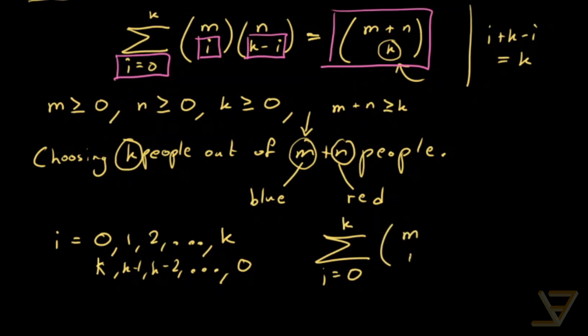Choosing i of the blue shirted people and choosing k minus i of the red shirted people and that's the same as choosing k people out of the m plus n people. So that proves Vandermonde's identity.